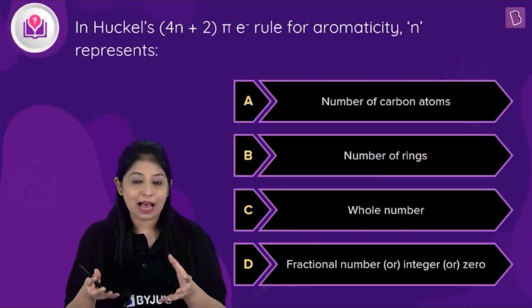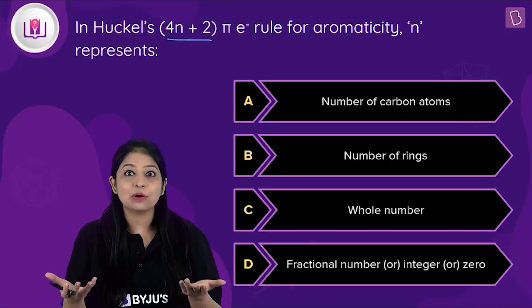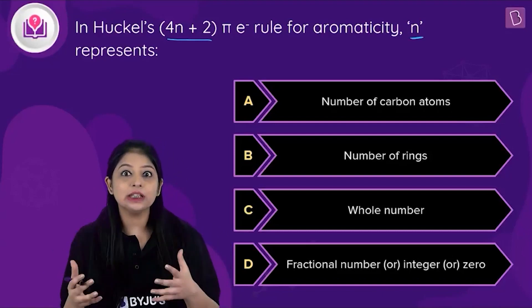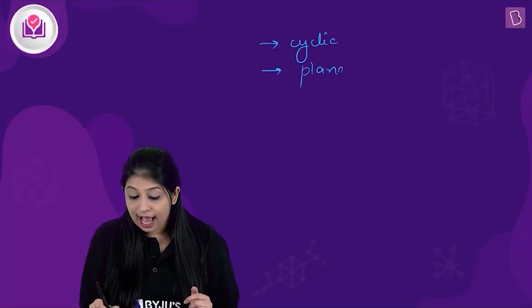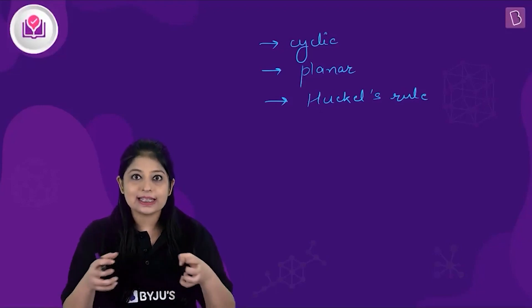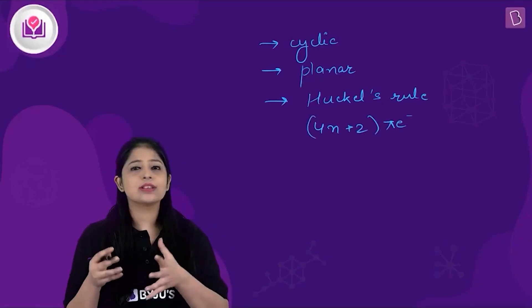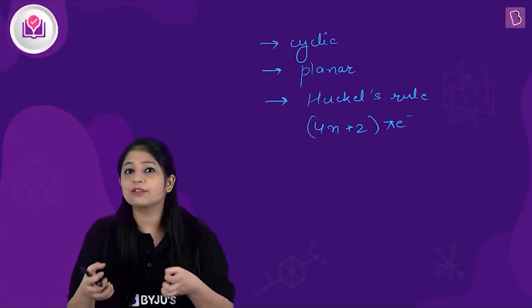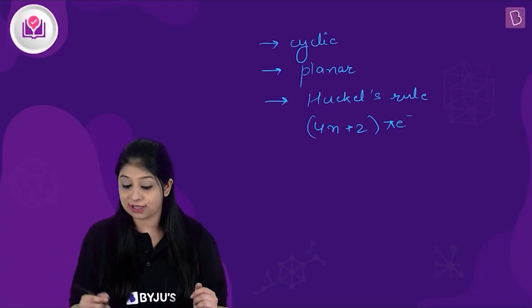Let's look at this question. We are asked: in Hückel's rule, which is one of the criteria for a compound to be aromatic, the rule states that an aromatic compound should have 4n + 2 π electrons. We are asked what n denotes. For a compound to be aromatic, it has to be cyclic, planar, and follow Hückel's rule — meaning the number of delocalized π electrons should equal 4n + 2.